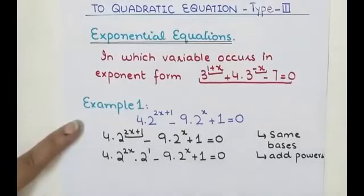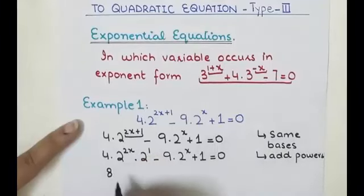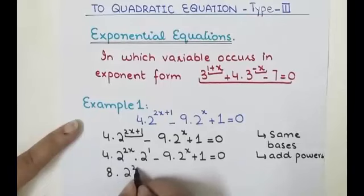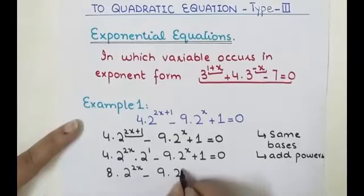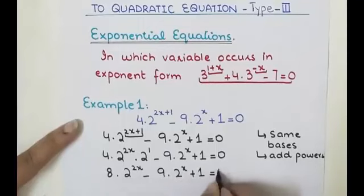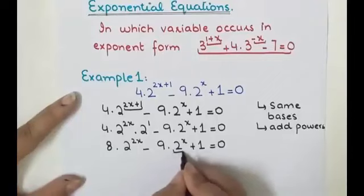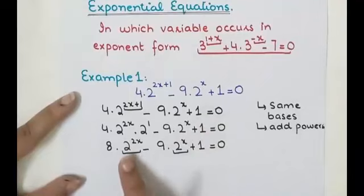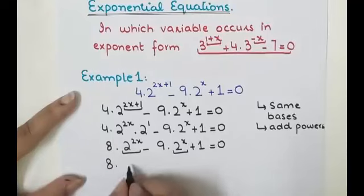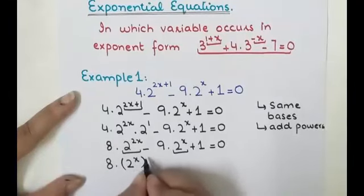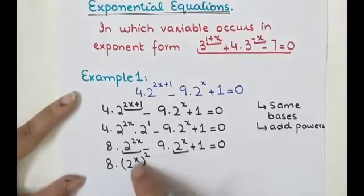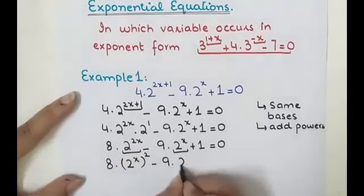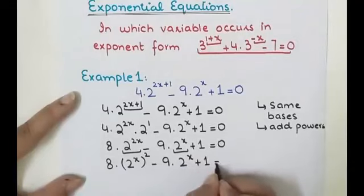Since 2^1 = 2, multiplying gives us 8·2^(2x) - 9·2^(x+1) = 0. Now we have 2^x and 2^(2x). To make these terms compatible, we rewrite 2^(2x) as (2^x)^2, because squaring 2^x gives 2^(2x). So we have 8·(2^x)^2 - 9·2^(x+1) = 0.